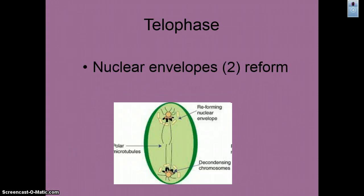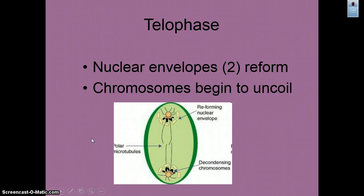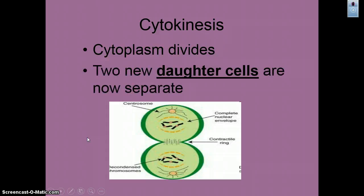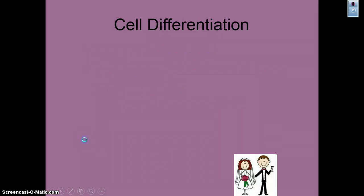In telophase, the nuclear envelope reforms — it had disappeared during prophase — and chromosomes start to unwind and uncoil. Then cytokinesis occurs, which is the division of the cytoplasm and cutting of the cell. You end up with two new daughter cells that are separate and genetically identical to the parent.